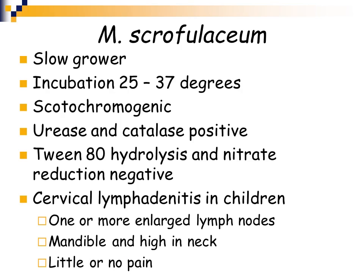Mycobacterium scrofulaceum is another slow grower. It can grow across a large temperature range, between 25 degrees and body temperature. It is a scotochromogen and is urease and catalase positive. Tween 80 hydrolysis and nitrate reduction are negative. It causes cervical lymphadenitis in children, characterized by one or more enlarged lymph nodes, usually in the high neck region around the mandible and jaw, causing little to no pain.